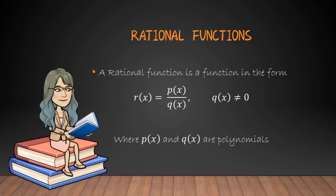Let's define first what is a rational function. A rational function is a function in the form R of x is equal to P of x all over Q of x, where Q of x is not equal to 0. P of x and Q of x are both polynomials. Rational functions are fractions where the denominator must not be equal to 0. Fractions with a denominator of 0 are called indeterminate or undefined.